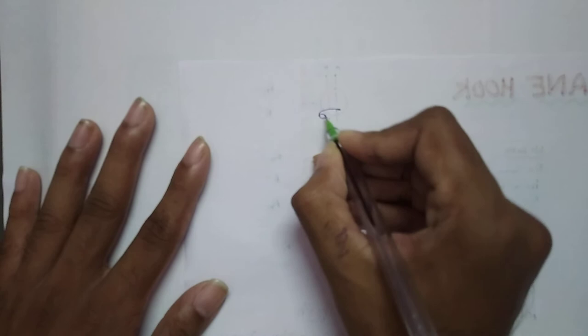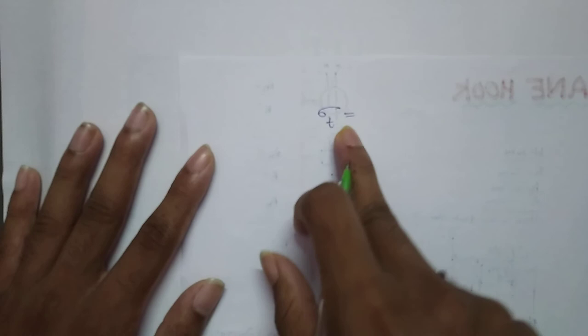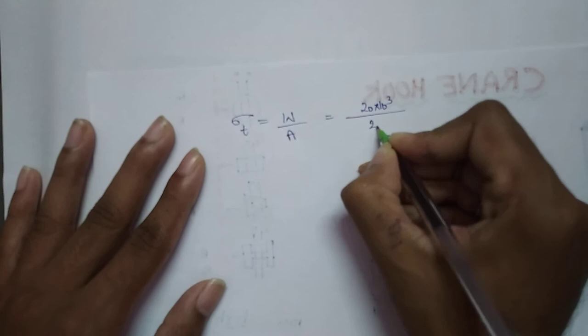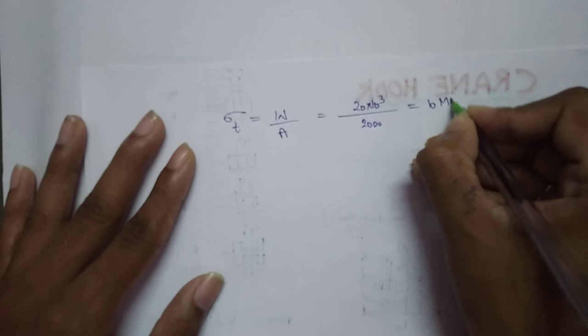Now we find the tensile stress at the cross-section axis. The formula is load divided by area: 20 × 10³ divided by 2000, which gives us 10 MPa. So tensile stress is 10 MPa.